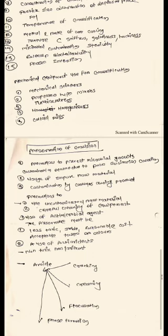If a question asks about the preservation of emulsion, key points include: usage of impure raw material is an important reason for contamination. Precautions to take include using uncontaminated raw material, careful cleaning of equipment, use of antimicrobial agents. The preservative must be less toxic, stable, of reasonable cost, and have acceptable color, taste, and odor. Use of antioxidants — it should be non-toxic and non-irritant. We need to avoid cracking, creaming, flocculation, and phase inversion.